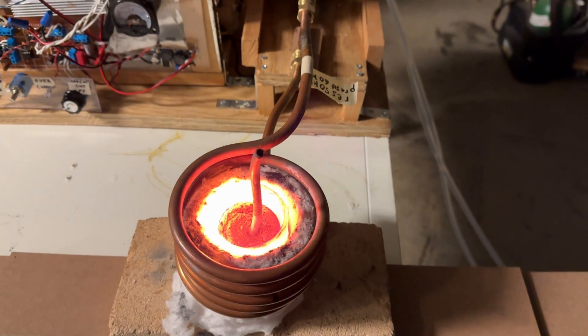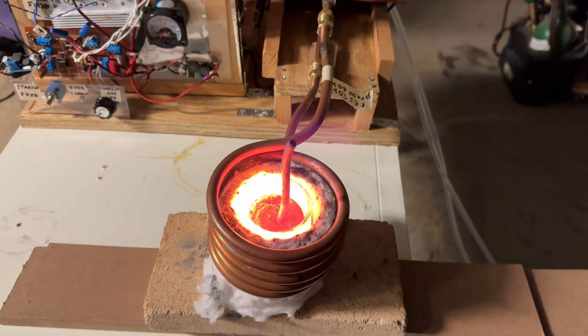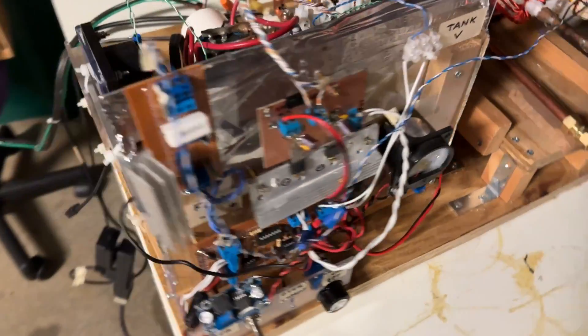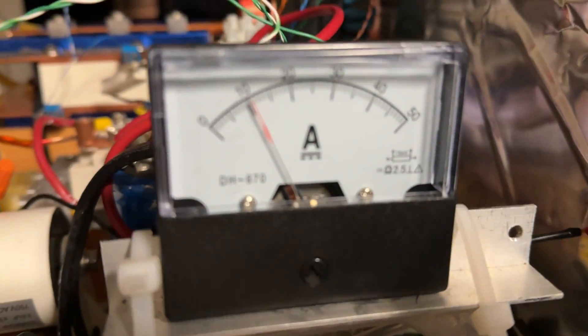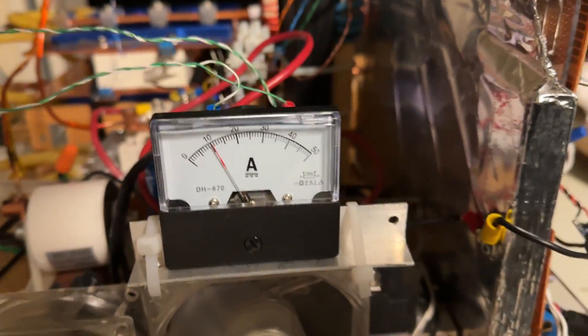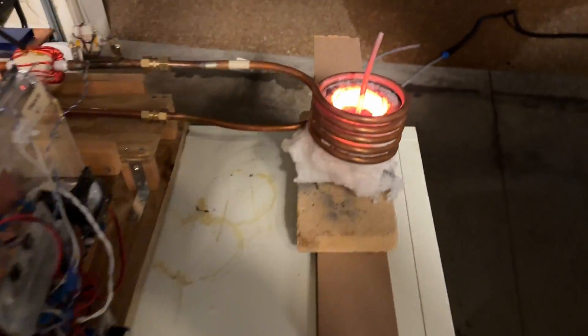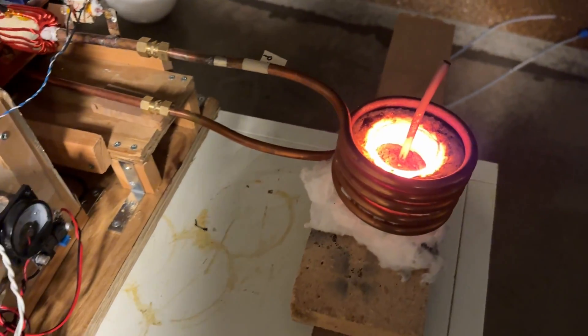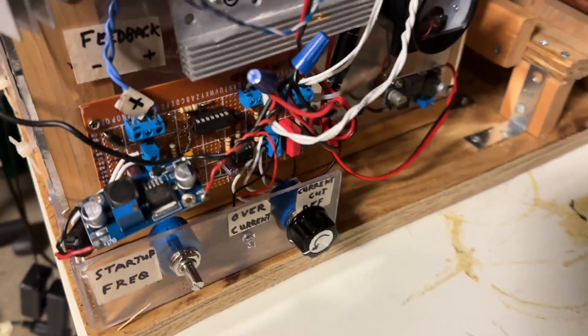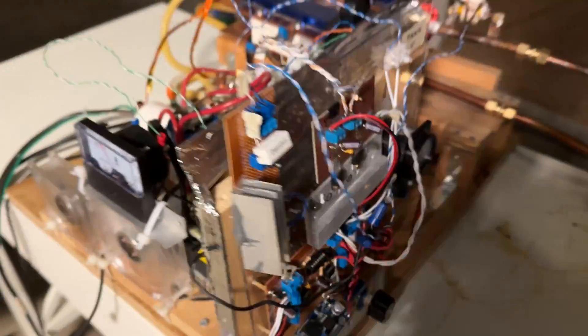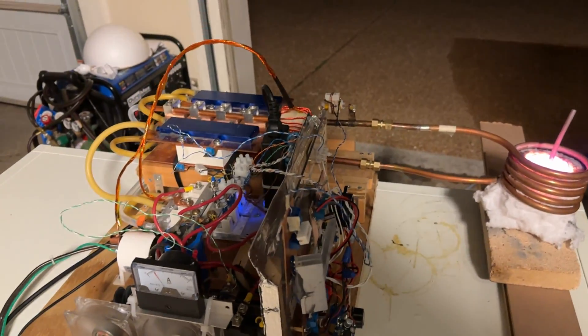I have a graphite crucible here to melt the scrap in. Let me just show you the current draw. It's drawing about 10 amps and we'll see how that current holds up. We're using the current limiting circuit here, so it should shut off if there's an overcurrent event.